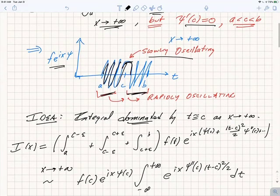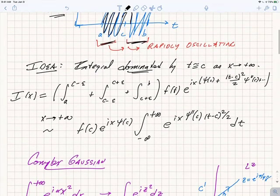We use the same basic idea that we did before. We're going to assume the integral is dominated by the contribution near t equals c as x goes to infinity. We divide our integral up into an integral between a and c-ε, from c+ε to b, and then the integral in the region of c.